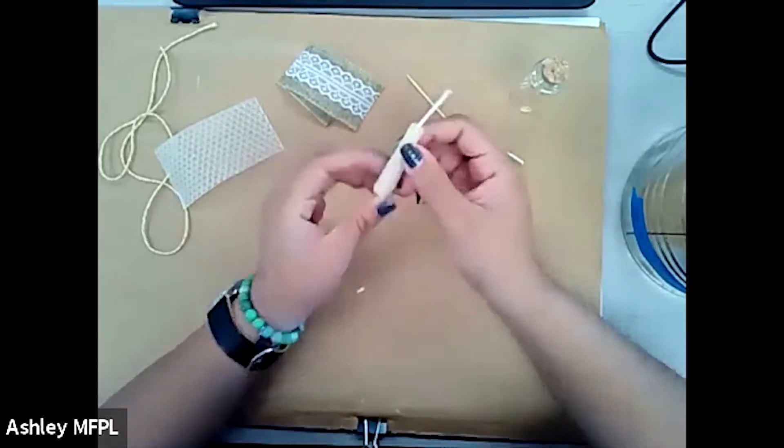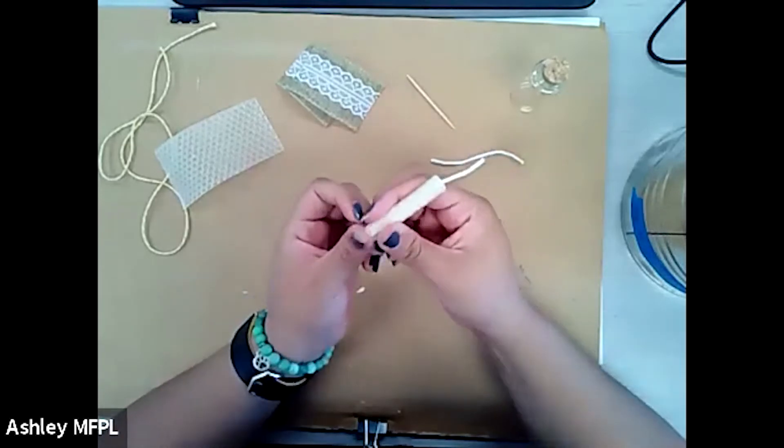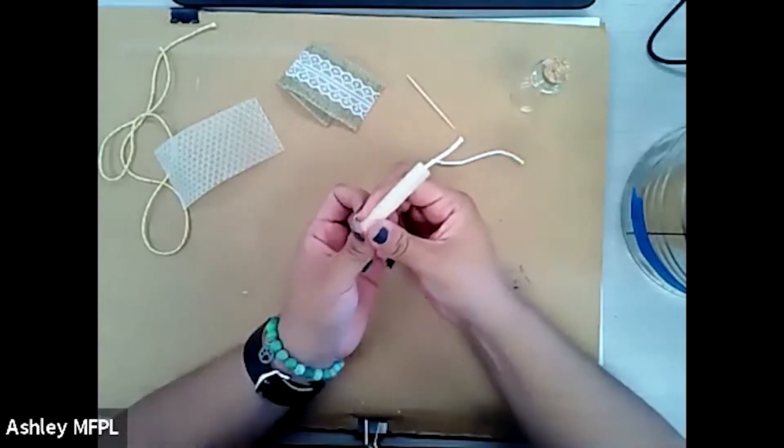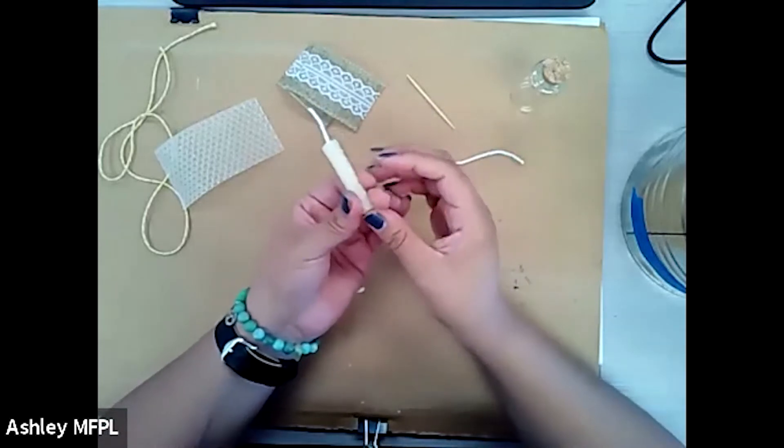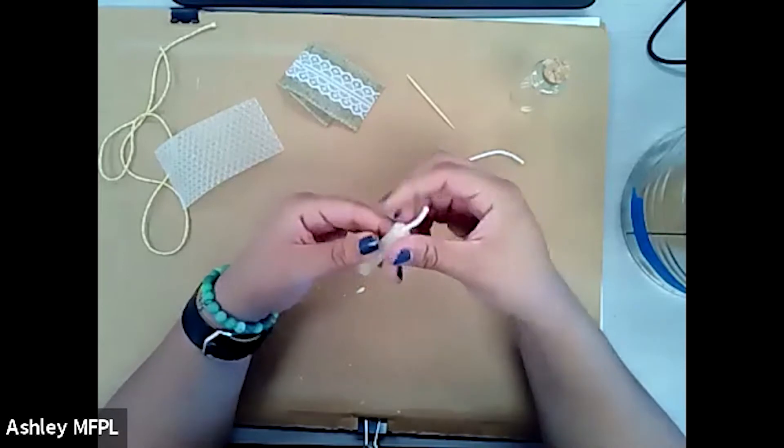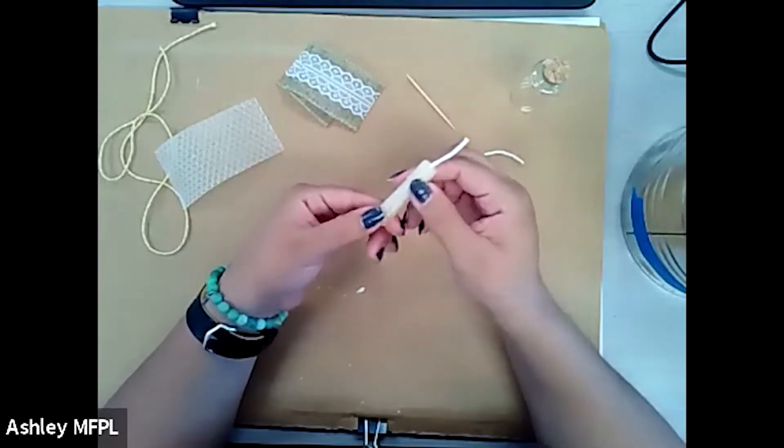Like I said, these are the easiest candles you'll probably ever make because you don't really have to melt anything. And they come in the honeycomb sheets already made. Sometimes Hobby Lobby will have them, but you can also get them off Amazon.